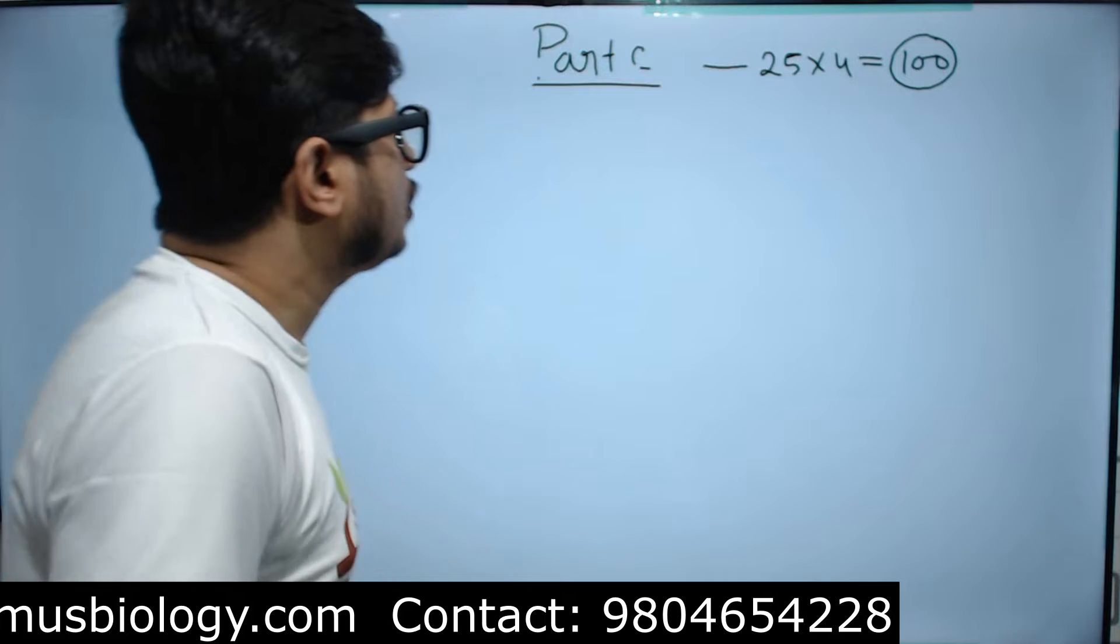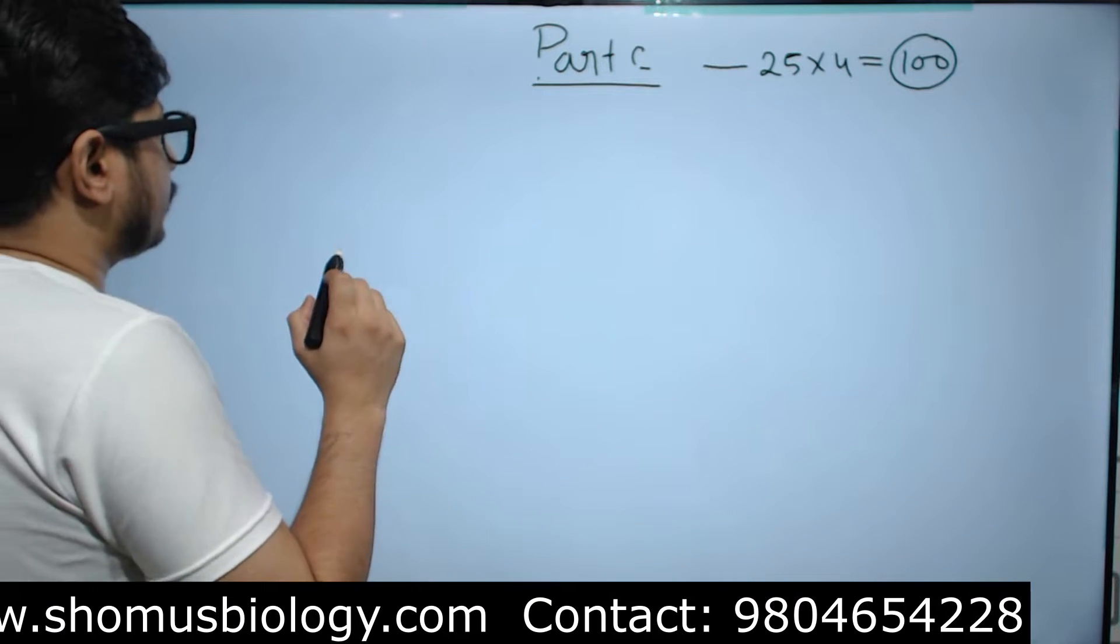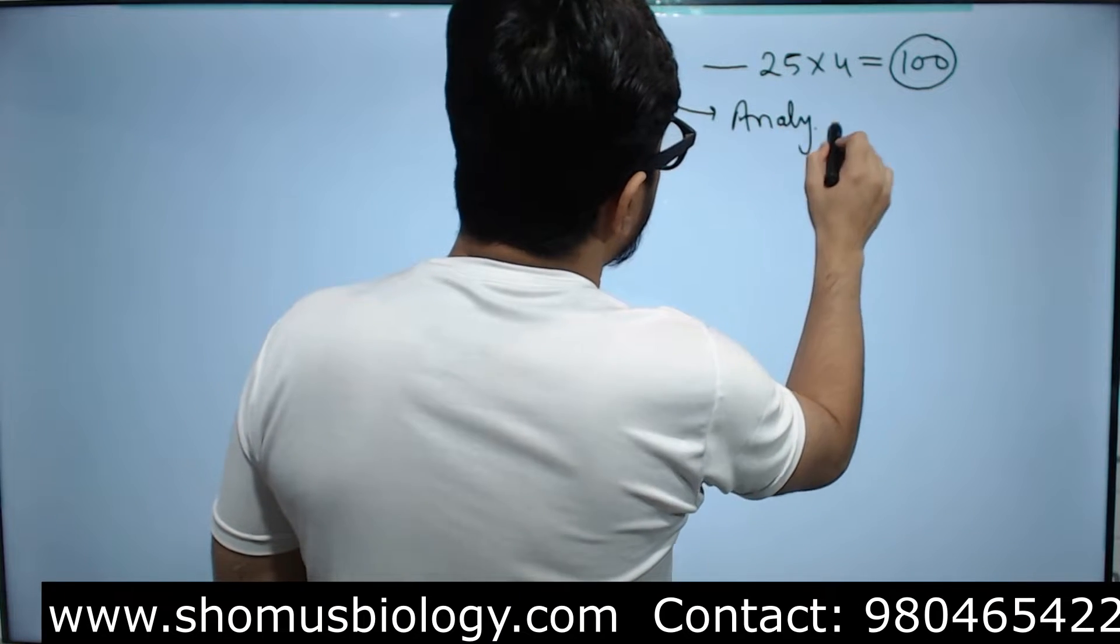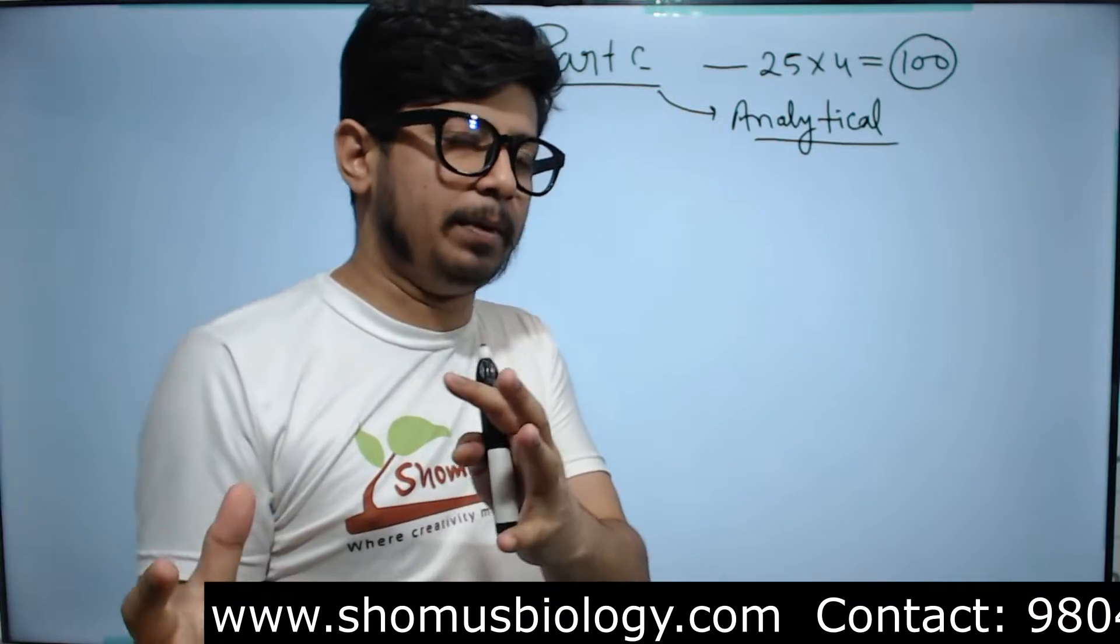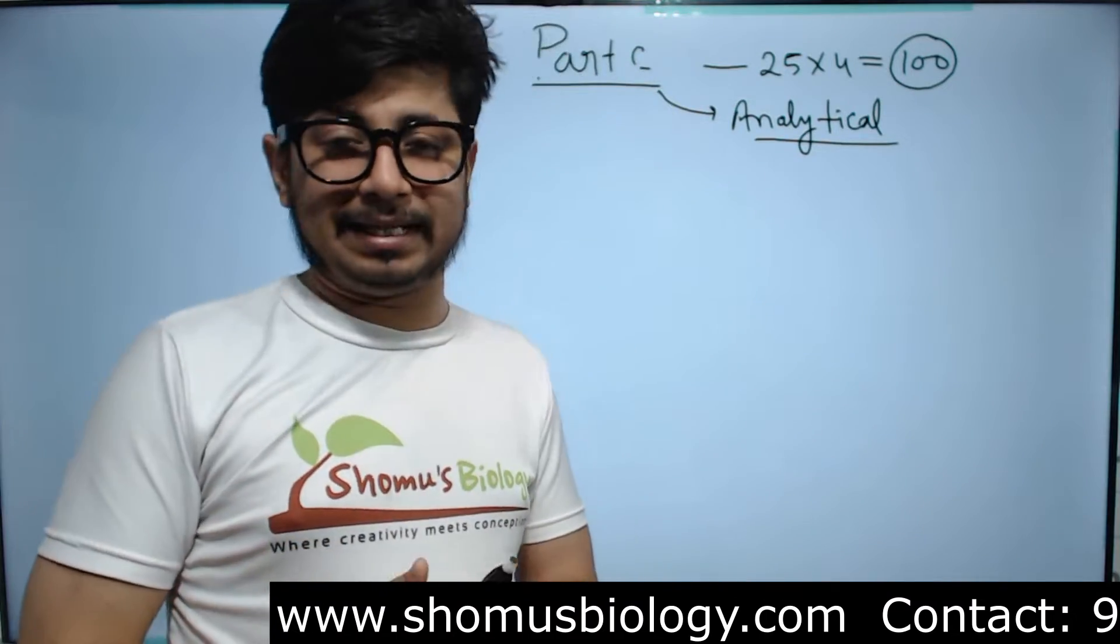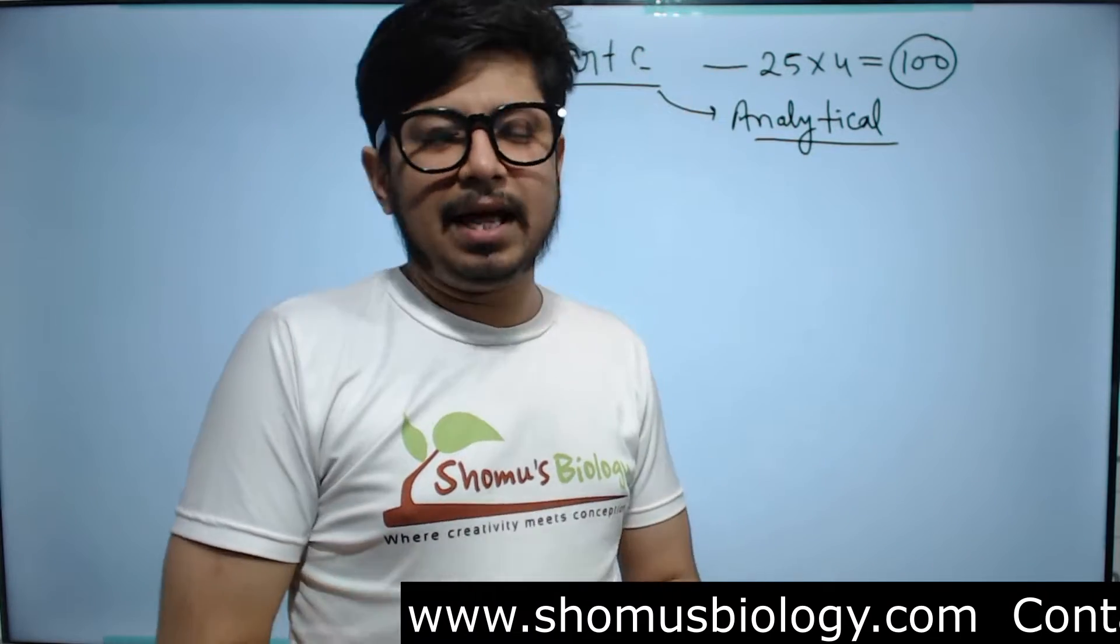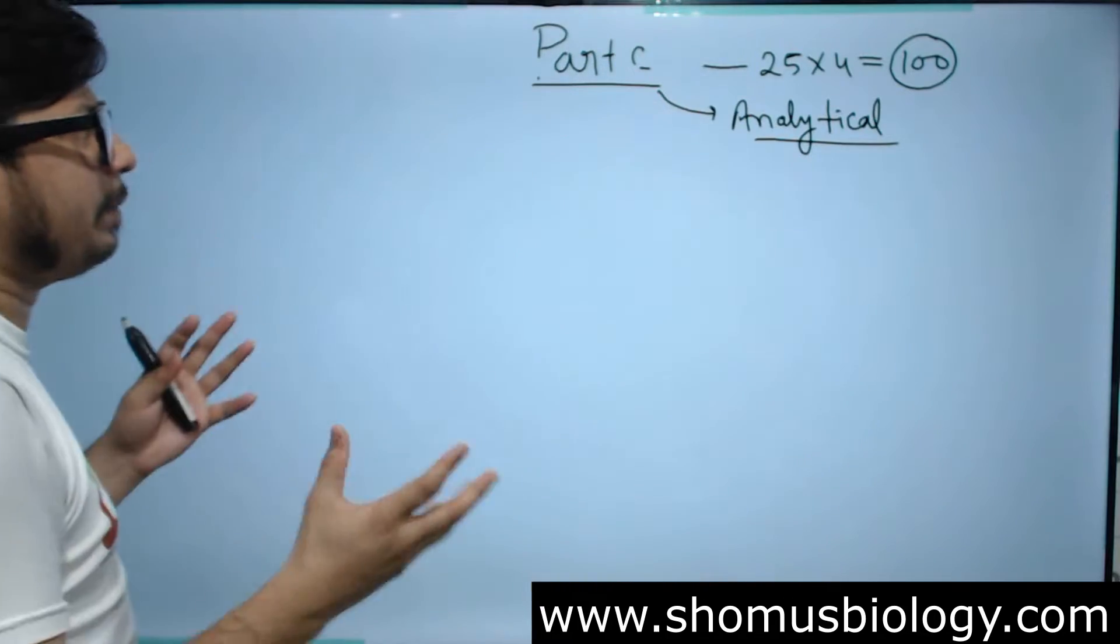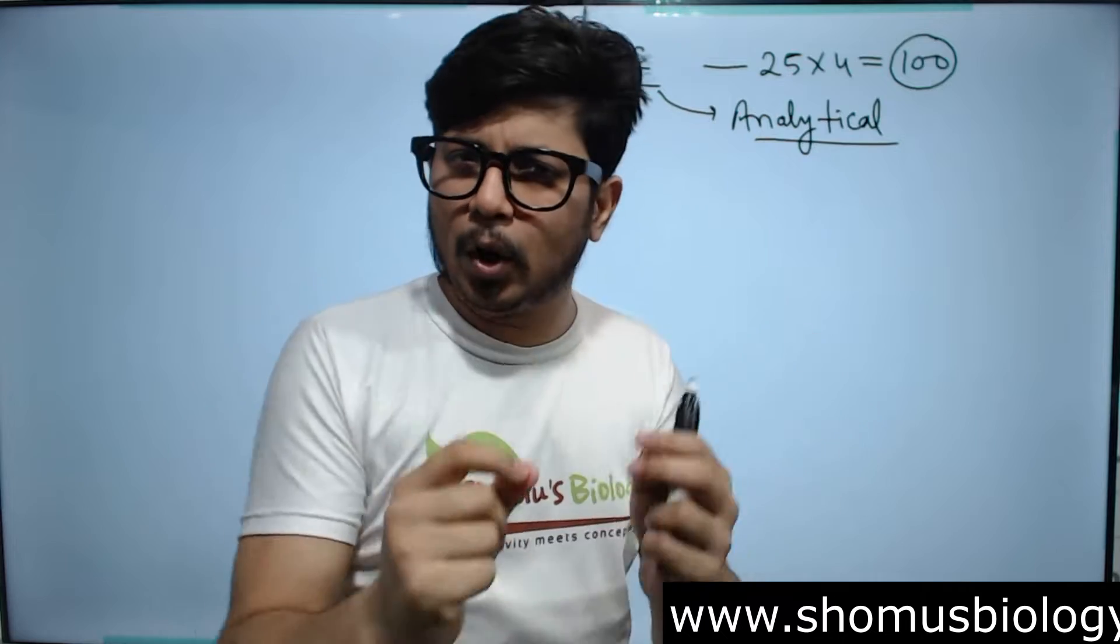In Part C, among the 13 units, the most important units they ask questions from - because Part C questions are analytical, they are analytical and you need to apply your brain, you need to think about a problem. Mathematical problems are there and analytical problems are there. The questions are bigger and lengthier and there are options to the question that you need to answer. Considering all these things, certain units are very important for Part C.